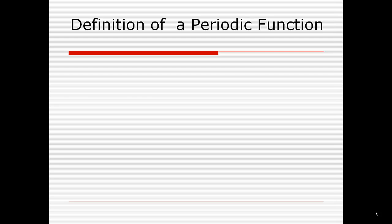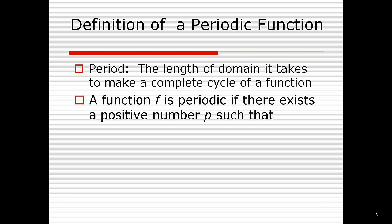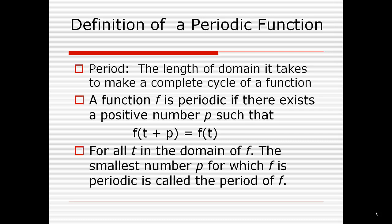Let's talk about what it means for something to be periodic. The definition of period is the domain it takes to make one complete cycle of a function. A function is periodic if there's a number such that adding that number to any other number on the function will result in the same number — f of t plus that period is equal to f of t. It repeats itself every p, and this must occur for every number in the domain of f.